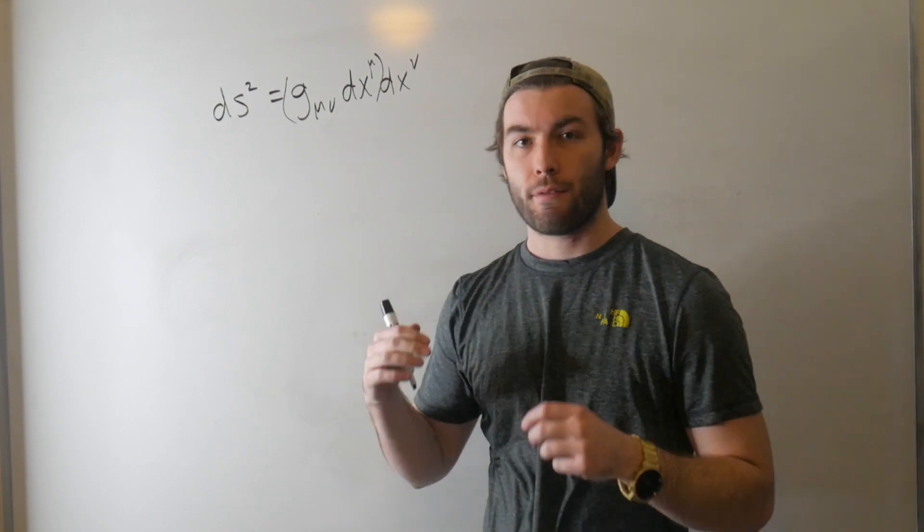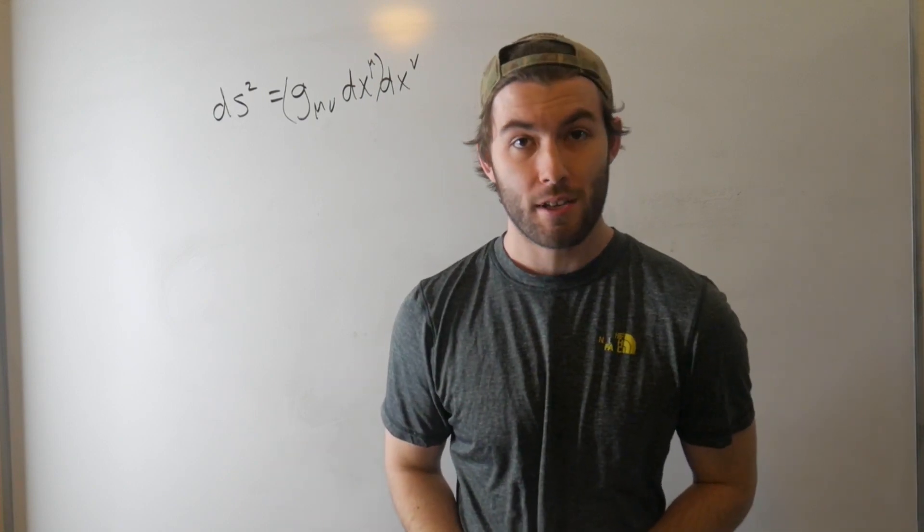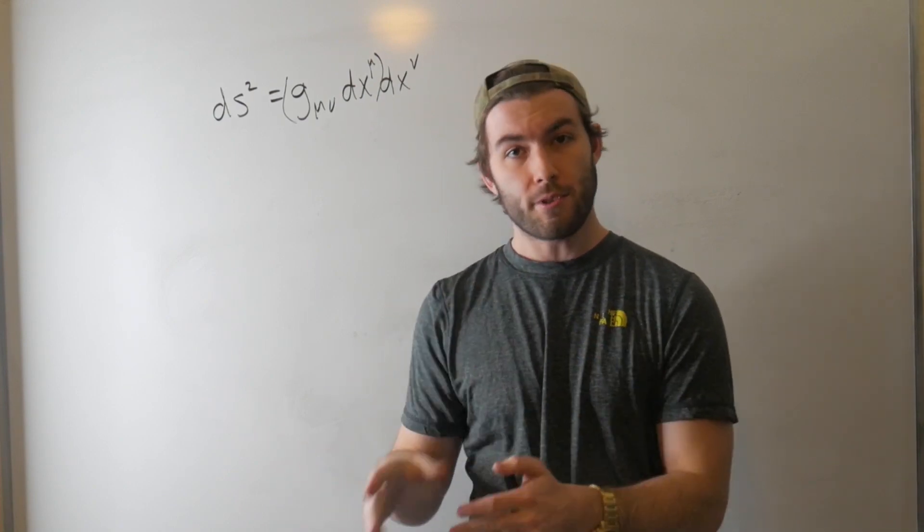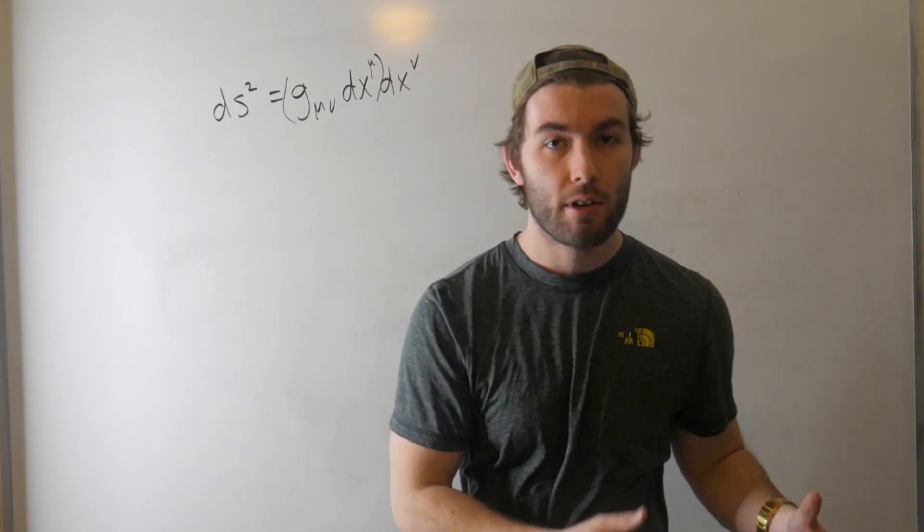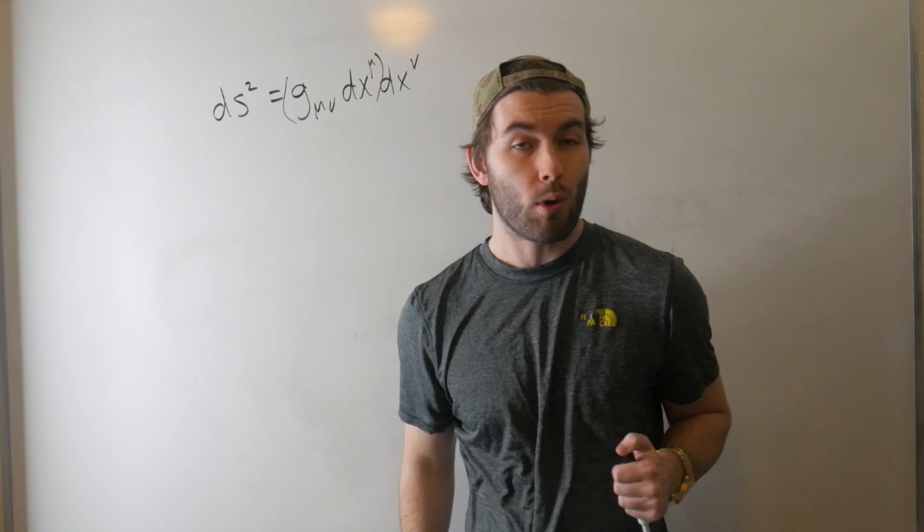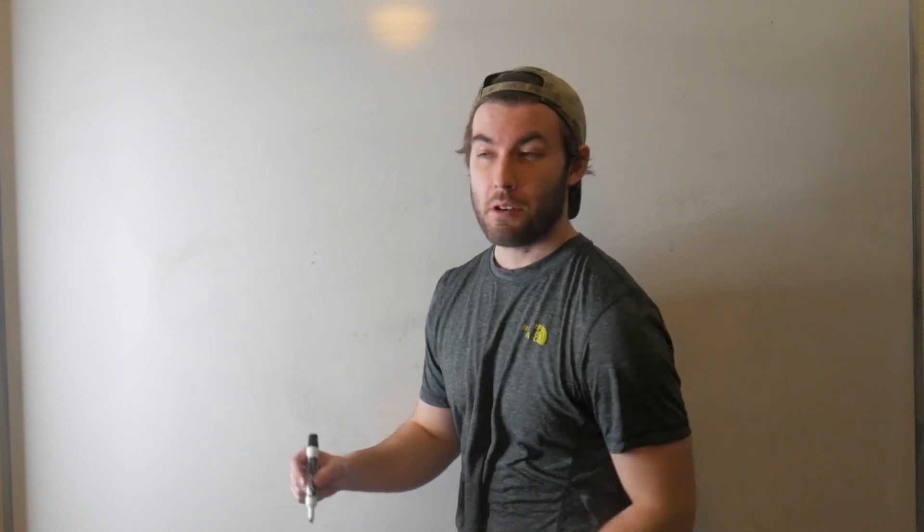So we've established that vectors with superscripts as indices are determined by your coordinates. And we now know that their duals are derived using the metric. Now vectors that have superscripts as indices for their components, those are the components of contravariant vectors. And their duals, the ones with subscripts, are sometimes called dual vectors, or components of covariant vectors, or components of one forms. It goes by many names. Now we're going to talk about covariant and contravariant vectors a lot more in the next video.